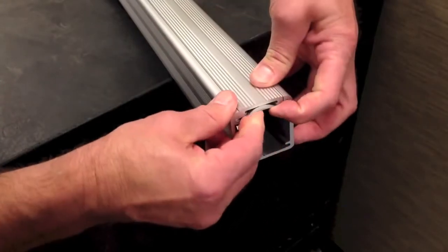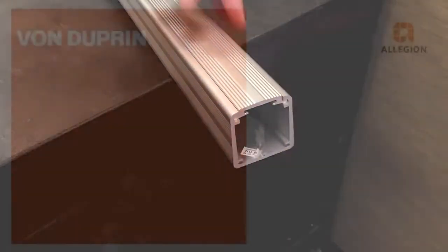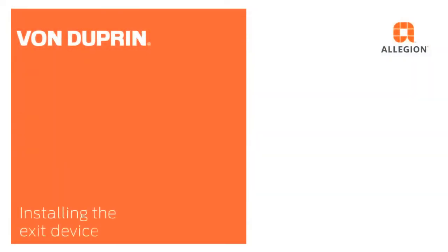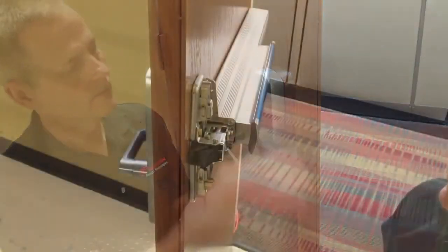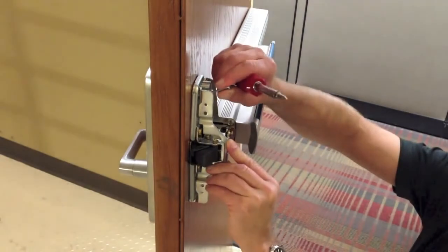Reinstall the anti-rattle clip a minimum of 2 inches into the exit device. Install the trim and secure the center case to the door with the reinforcing bracket and four provided screws.